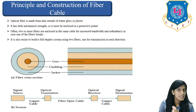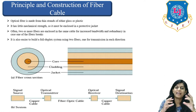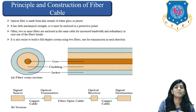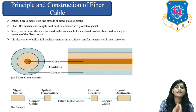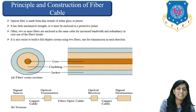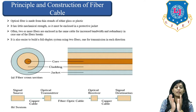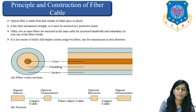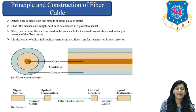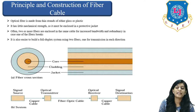Whether we talk about glass or plastic, neither has much strength, so we need to give it a proper jacket or covering, known as a protective jacket. Often two or more fibers are enclosed in the same cable for increased bandwidth and redundancy in case one fiber breaks.